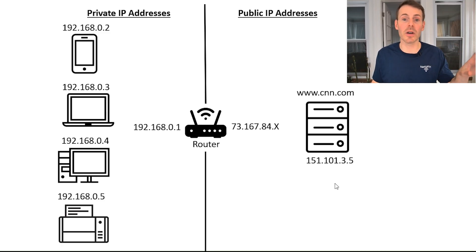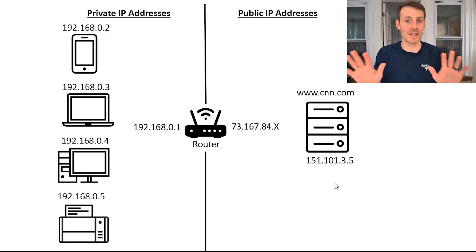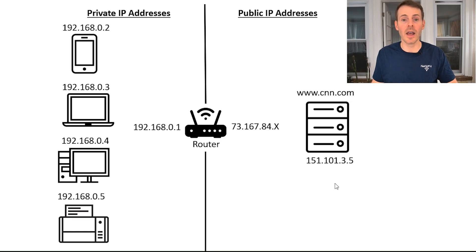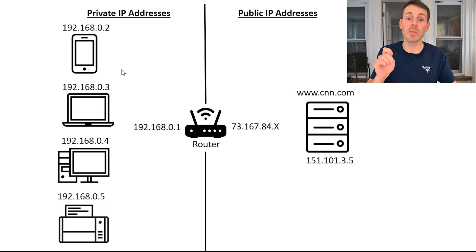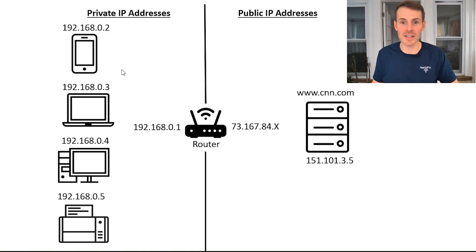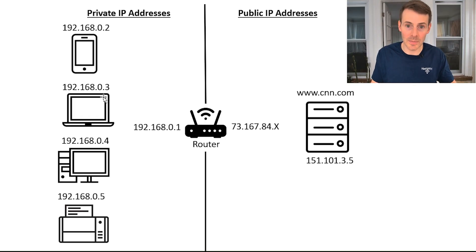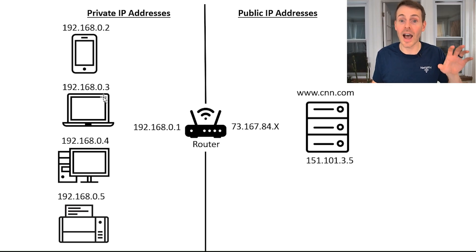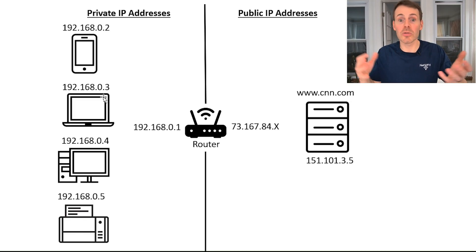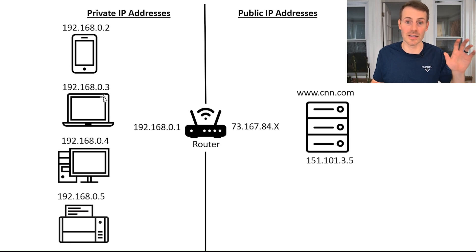This technology is called network address translation — we'll get into the details in a separate video. So let's say I had 100 devices on my home network. All of these devices can share that one public IP address to access the internet. Whereas if we didn't have private and public IP addresses, all 100 devices would need public IP addresses. You'd see very quickly that those 4.3 billion IPv4 addresses would run out within a day, which is exactly why we have private IP addresses in the first place.